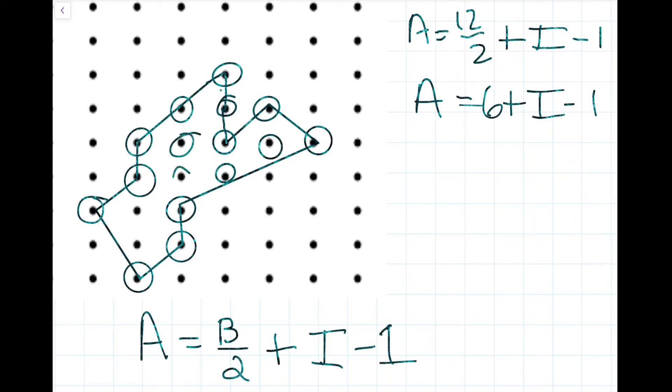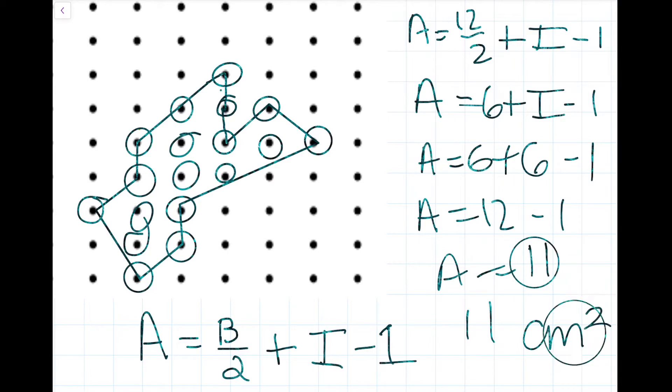1, 2, 3, 4, 5, 6. So then A equals 6 plus 6 minus 1, so then A equals 12 minus 1 and that is equal to 11. So the area is equal to 11 centimeters squared. Okay, so let's move on to the next problem.